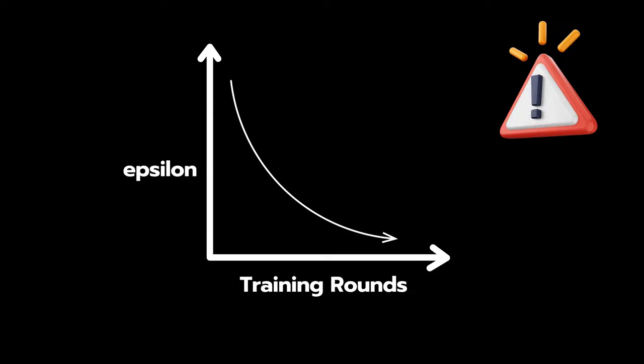Alright, jargon alert. Q-learning is what we call an off-policy algorithm. In simple terms, we start with a high epsilon value which determines how random your actions will be, making Jerry take mostly random actions.